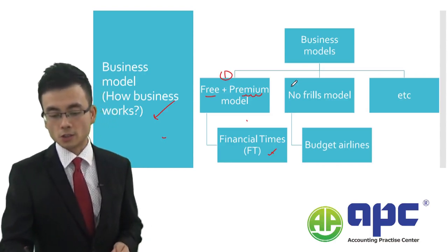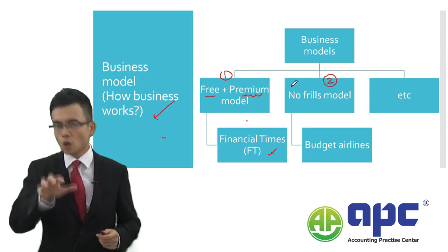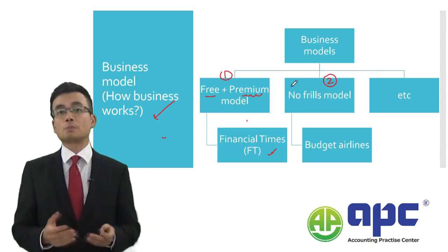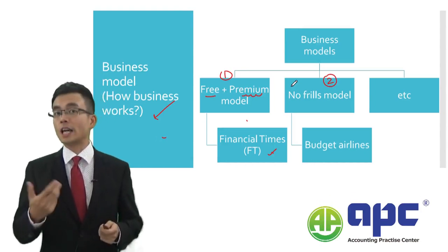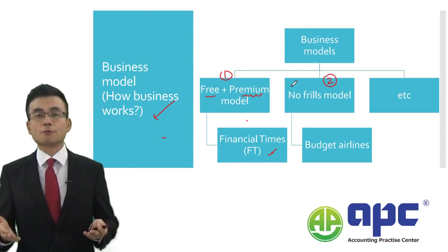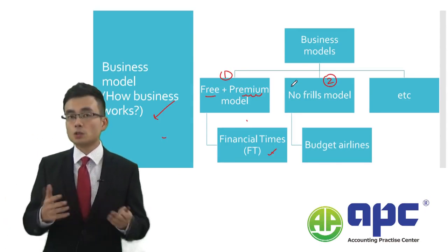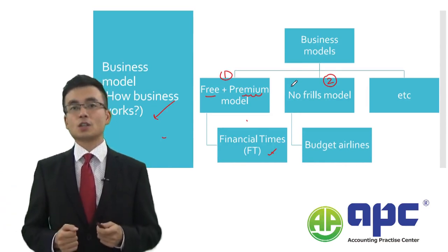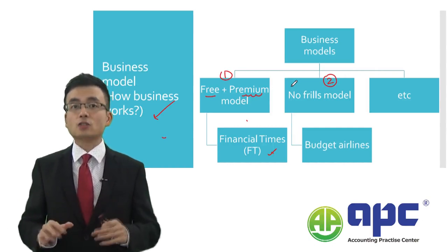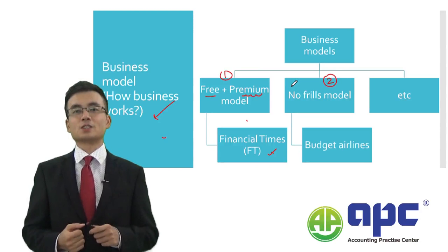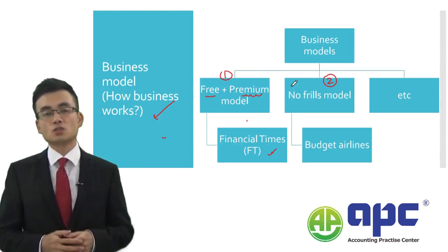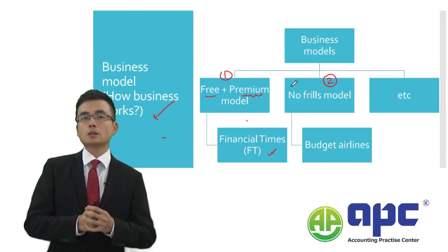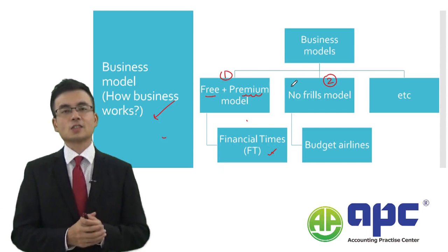The second type of business model is called the no-frills model, which means they are not adding any extra value to their products or services. This is quite common in budget airlines, where you buy the airline ticket and only enjoy the flight — if you want food or drinks you have to pay for it. This is also common at McDonald's, which provides standardized services for its meals without adding extra value to customer support. This means the price they charge is usually lower than the price charged by other entities, and that is the key idea.